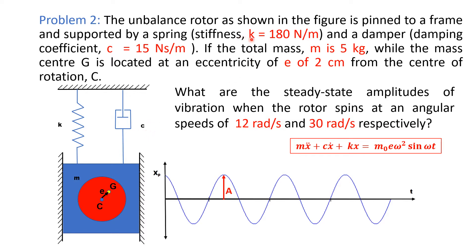This rotating unbalanced mass system is attached to the support by a spring of stiffness K = 180 N/m and dashpot of damping coefficient C = 15 N·s/m. The total mass of the rotating unbalanced mass system is 5 kg and eccentricity is 2 cm. We have to find the steady-state amplitudes of vibration when the rotor spins at angular speeds of 12 rad/s and 30 rad/s respectively.